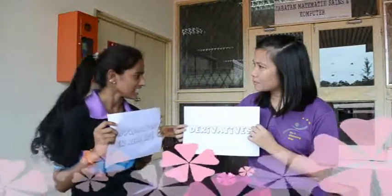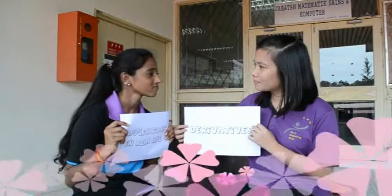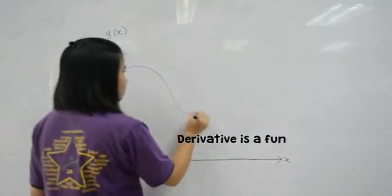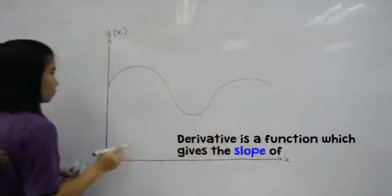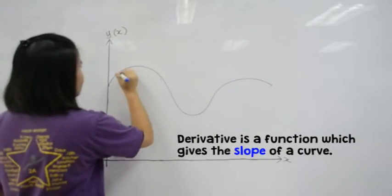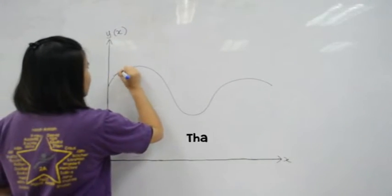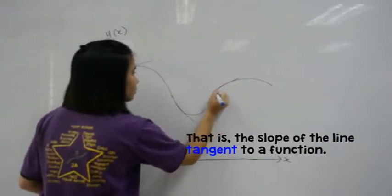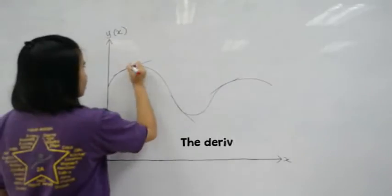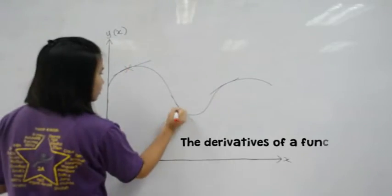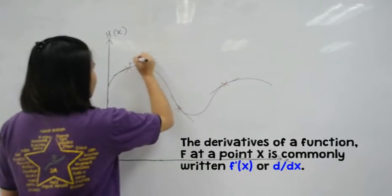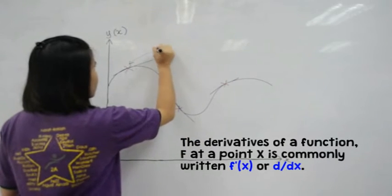A derivative is a function which gives the slope of a curve — that is, the slope of the line tangent to a function. The derivative of a function f at a point x is commonly written as f'(x) or d over dx.